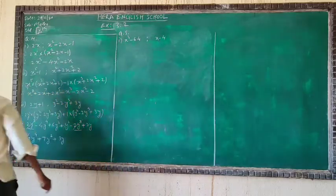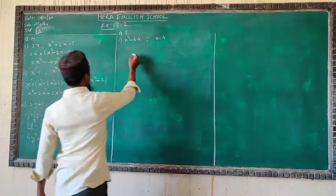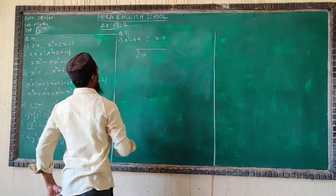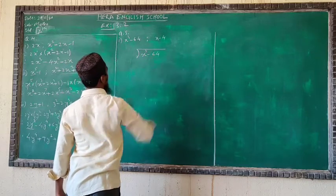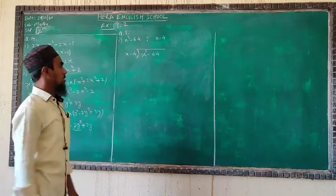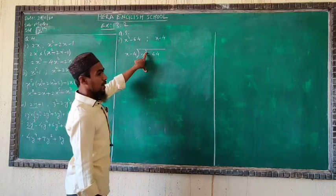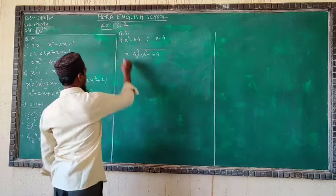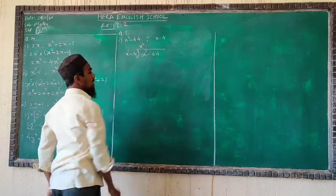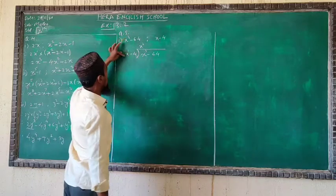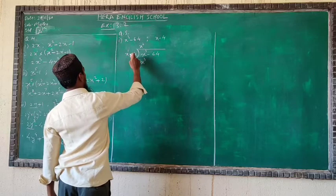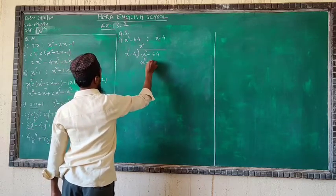You know the division rule — it will be used here. Write the dividend x³ - 64, and the divisor x - 4. Power 3 divided by power 1: subtract 3 minus 1 to get power 2 — that is the first term of the quotient, x². Multiply x² by (x - 4): you get x³ - 4x². Subtract — signs change, x³ cancels, leaving +4x² - 64.